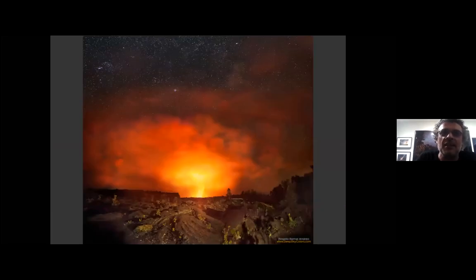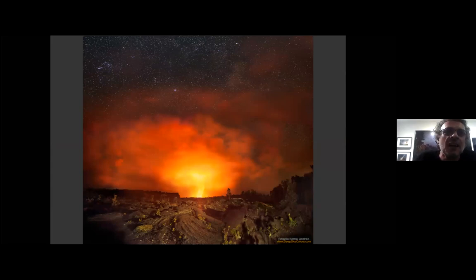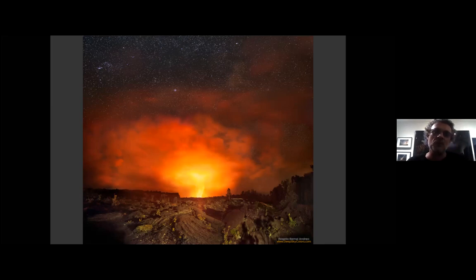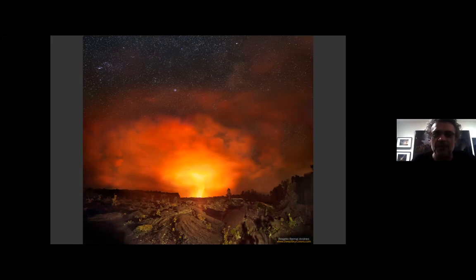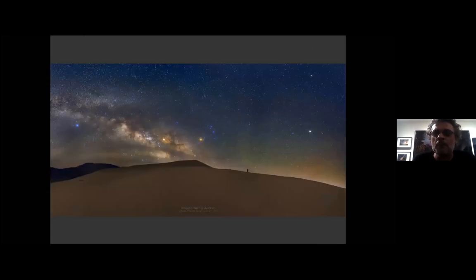This one is the Kilauea volcano on the Big Island of Hawaii. You can see a little bit of Orion on the top left, and that little white spot near the middle-top is the Milky Way. This was a night that's always windy at this crater, so the fumes always go to one side — but that night it was still with absolutely no wind, so everything was going straight up. It was just so apocalyptic and really incredible.